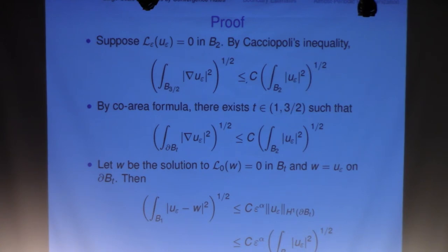And then we're going to use this generic boundary data to generate the approximation function w. So with a boundary data Uy on the boundary of Bt. So in other words, w actually is the homogenized solution for Uy, but in the ball of Bt here.